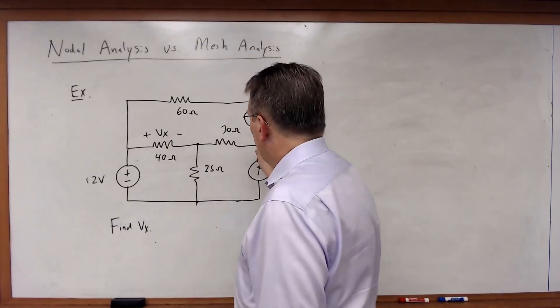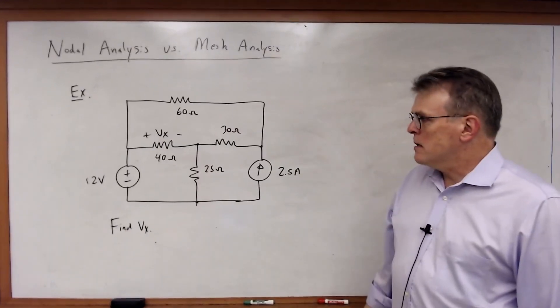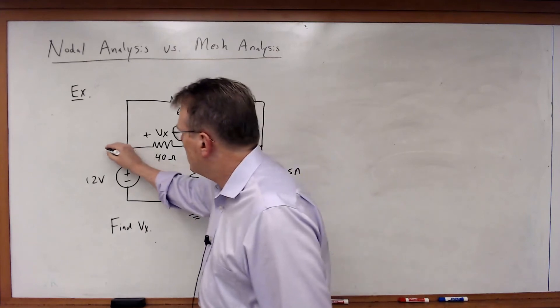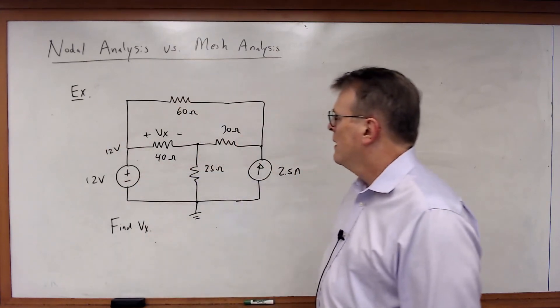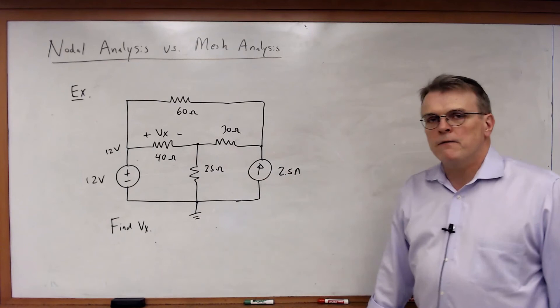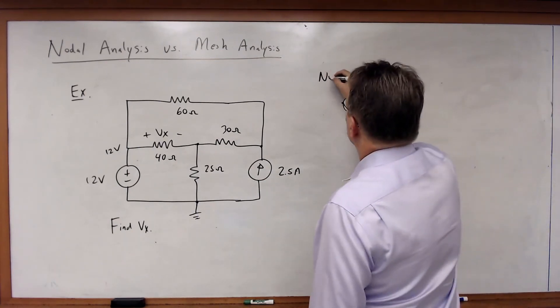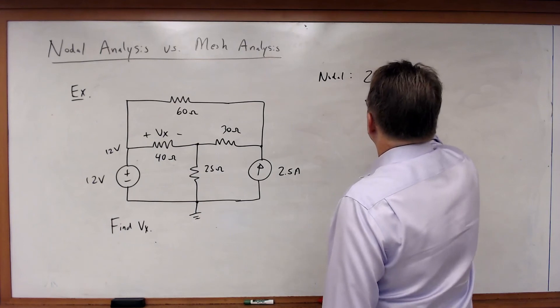I've got one, two, three, four essential nodes. I'm going to ground the bottom here because if I do that, that becomes 12 volts. And that means I've got one, two undefined mesh currents, which means two KCL equations. So for nodal, I've got two KCL.